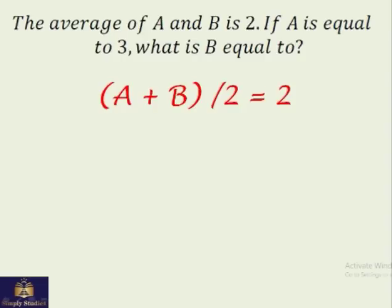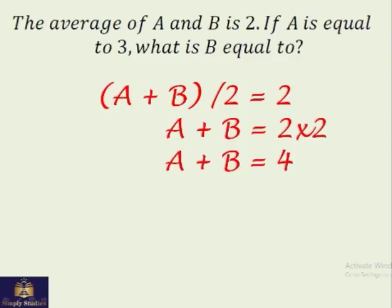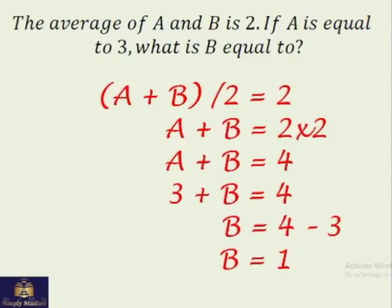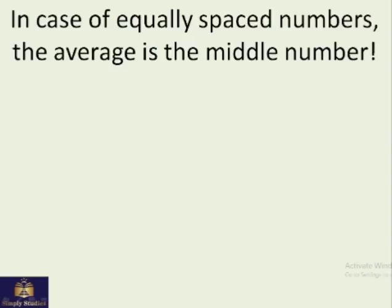Let's do another question. The average of A plus B is 2. If A is equal to 3, what's B equal to? So we convert this into mathematical language. So we say, average of A plus B, that is A plus B divided by 2, is 2. Which gives you the sum of A plus B equals 4. Now we sub in the value of A, that is 3. That gives us the value of B, which is equal to 1. That was easy.